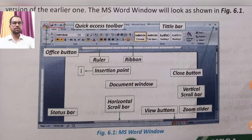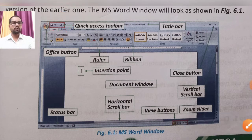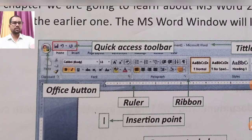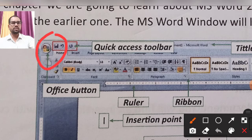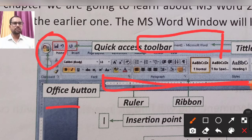Now let's look at the window on the screen. Here we have the Quick Access Toolbar. We also have the Office Button at the top. There is a ruler which helps change page layout. The Title Bar at the top of the screen shows the file name when a file is saved.